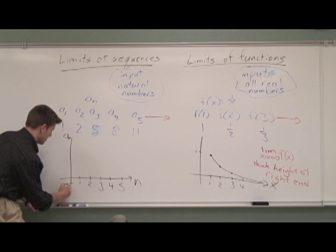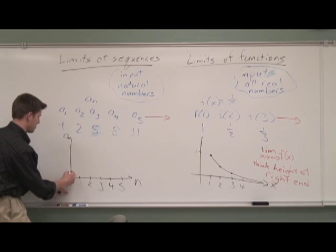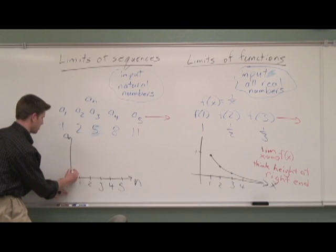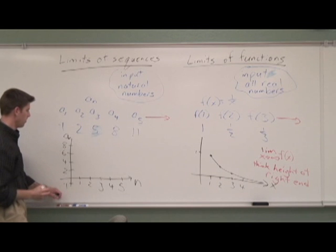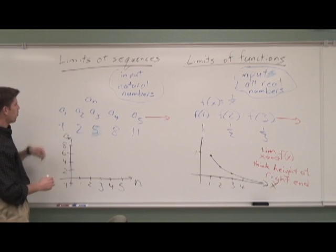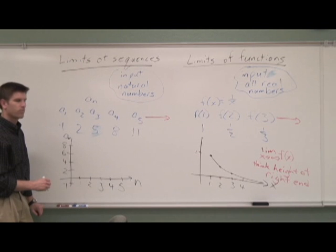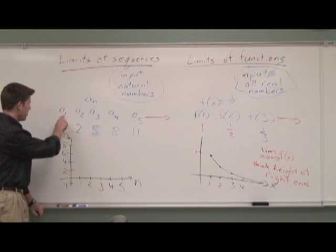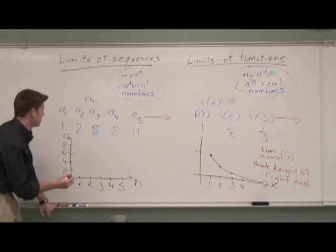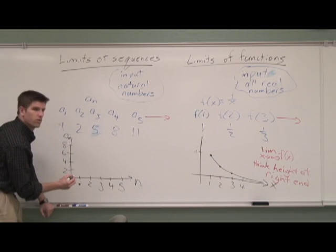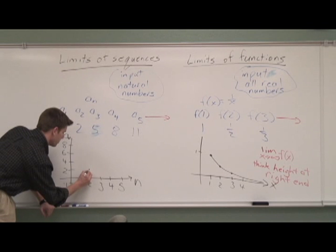Let me put -1 down here. Then 2, 4, 6, 8, and so on. So my first point would be what? (1, -1). Perfect. My second point? (2, 2). Then?